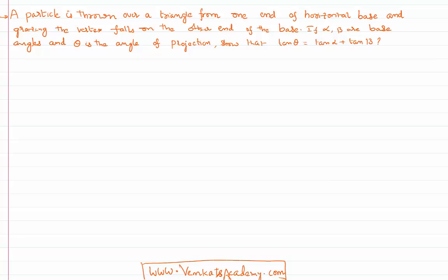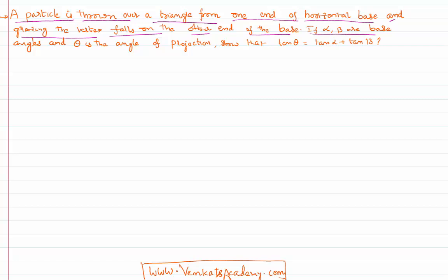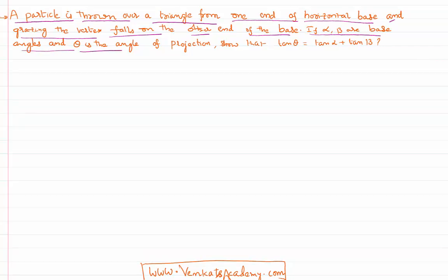Hello everyone, welcome to this video lesson. We are solving a problem in motion of a body in a plane, or two-dimensional motion. The problem is: a particle is thrown over a triangle from one end of a horizontal base, grazing the vertex and falling on the other end of the base. If alpha and beta are the base angles and theta is the angle of projection, show that tan theta equals tan alpha plus tan beta.